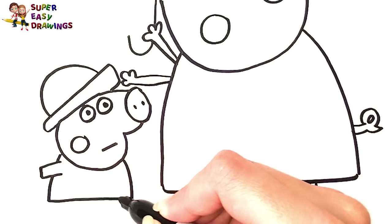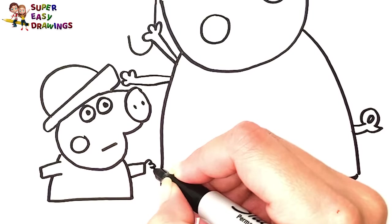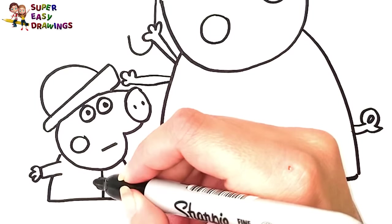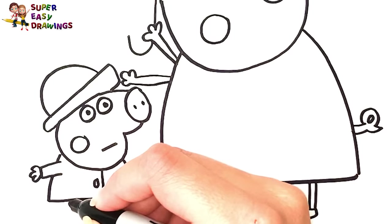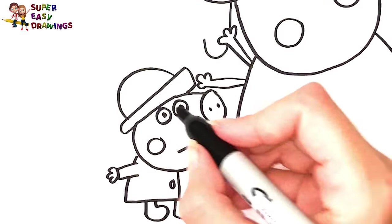Now I draw his body. His two arms. He is wearing a raincoat. And his two legs, and also boots on his feet.